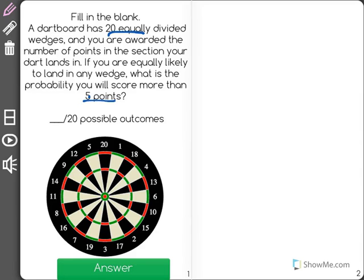Blank out of 20 possible outcomes. So we know that there are 20 possible outcomes ranging from 1 to 20.